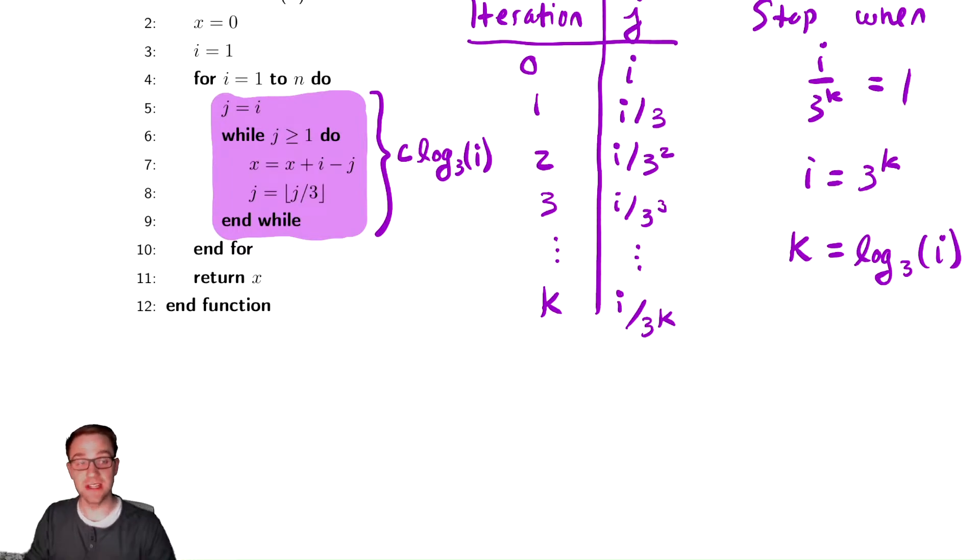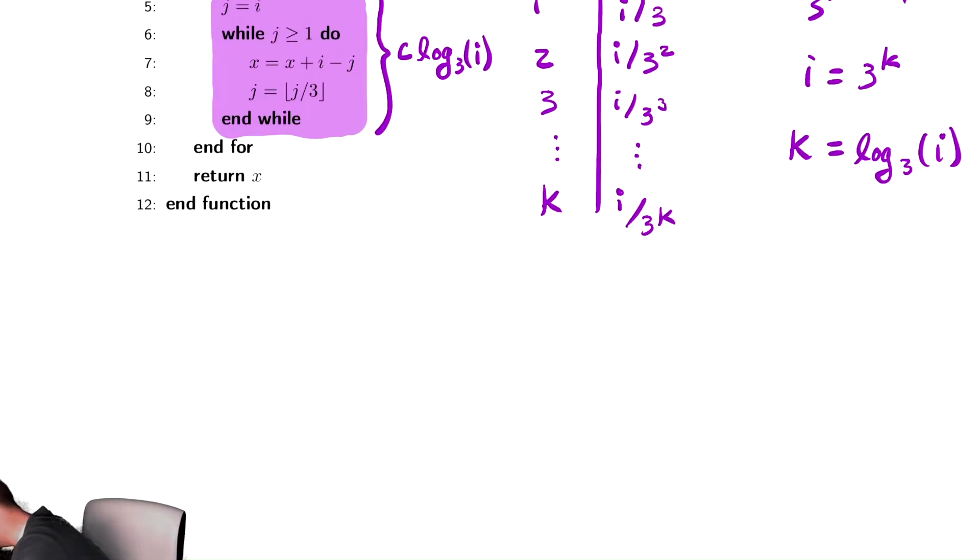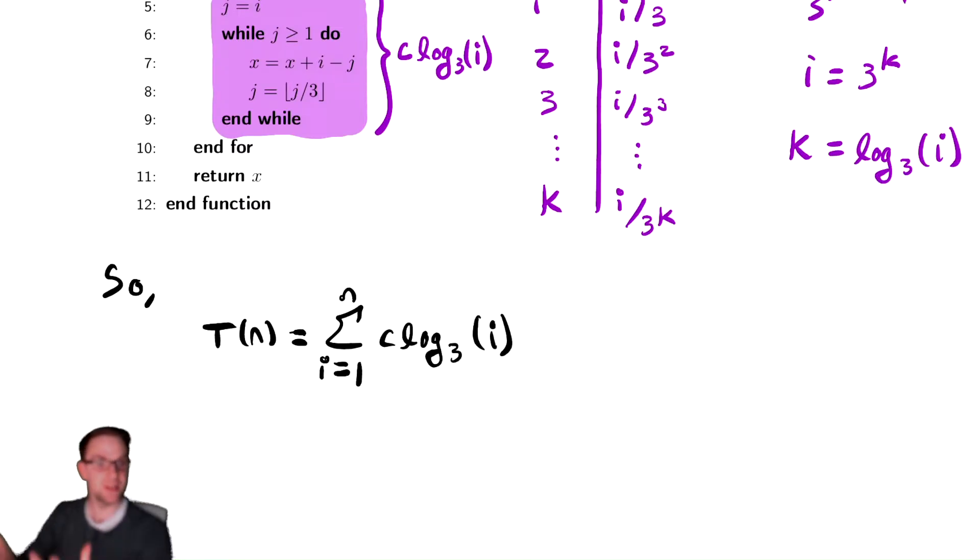However, that is sandwiched inside of a for loop and we know how to analyze for loops. For T of n I'm going to express as a summation. So T of n is equal to a sum from i equals 1 to n of C log base 3 of i. And now we have a summation to analyze. This is much more familiar territory for us. We can now analyze the summation by bounding it above and below.